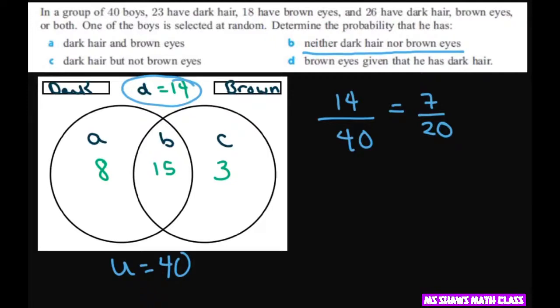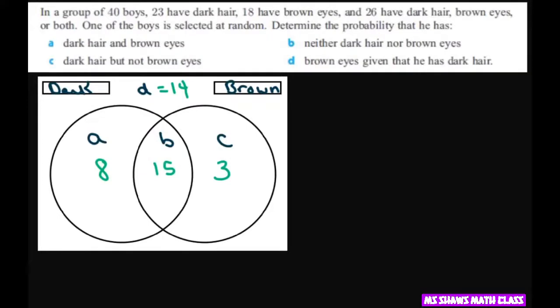And then for C, we have dark hair but not brown eyes. So that means only this portion. That just means only dark hair. So that would be 8 out of 40. And that reduces to one fifth.